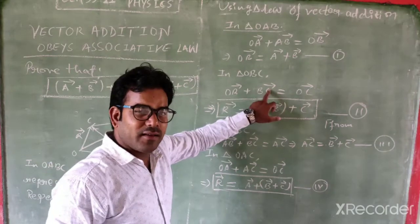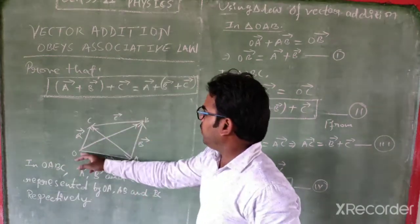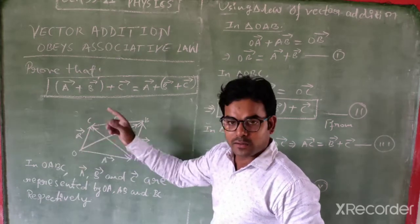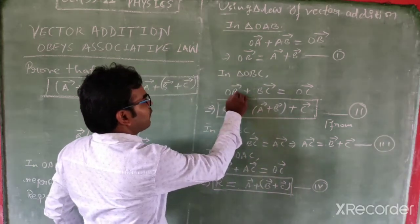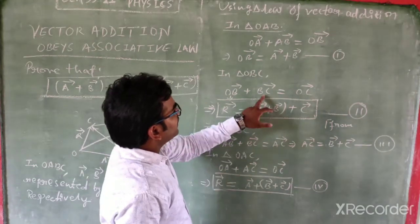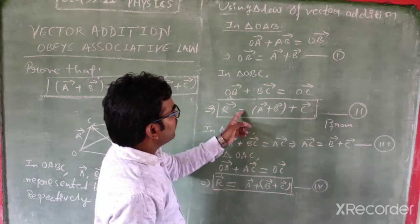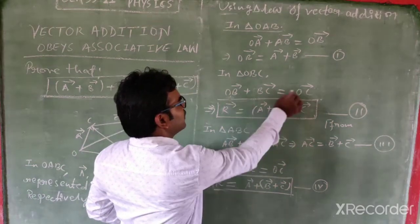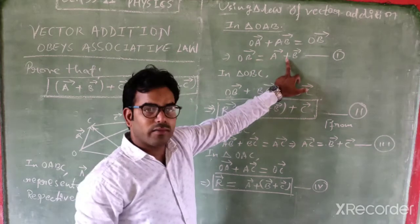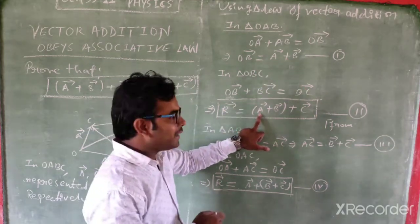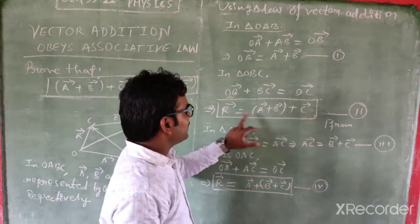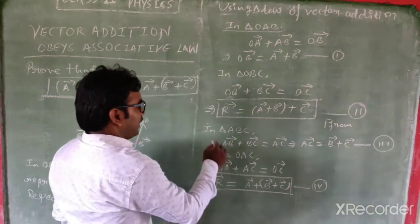In triangle OBC, vector OB plus vector BC is equal to resultant vector OC. That means vector OB plus vector BC is equal to vector OC, and vector OC equals vector R. Vector OB is equal to vector A plus vector B, and vector BC is equal to vector C. This is equation number two.